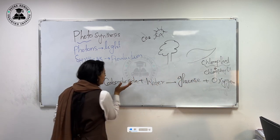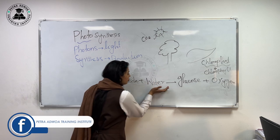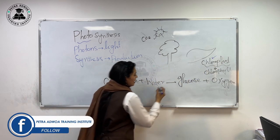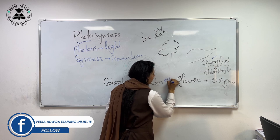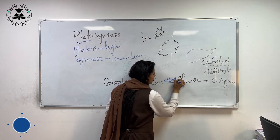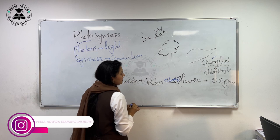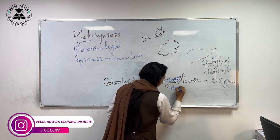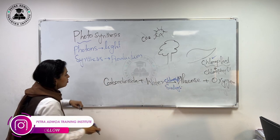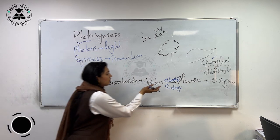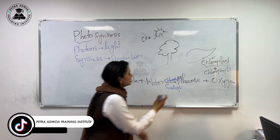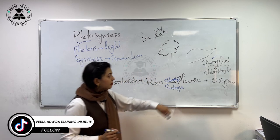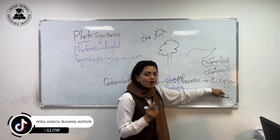So plants can utilize carbon dioxide and water. Photosynthesis occurs in the chloroplasts, and what is required is chlorophyll. Plants use sunlight. So plants use carbon dioxide and water in the presence of sunlight and chlorophyll, and they produce glucose as well as oxygen.